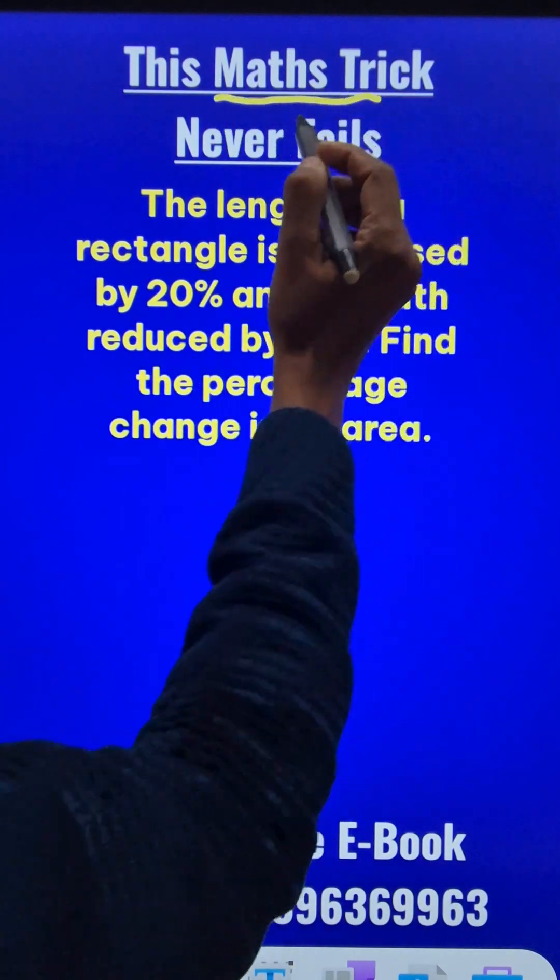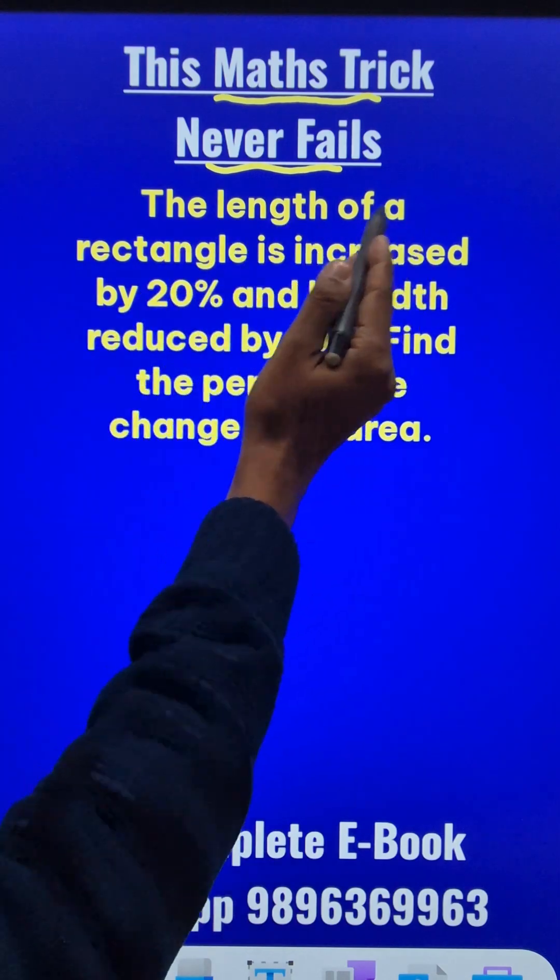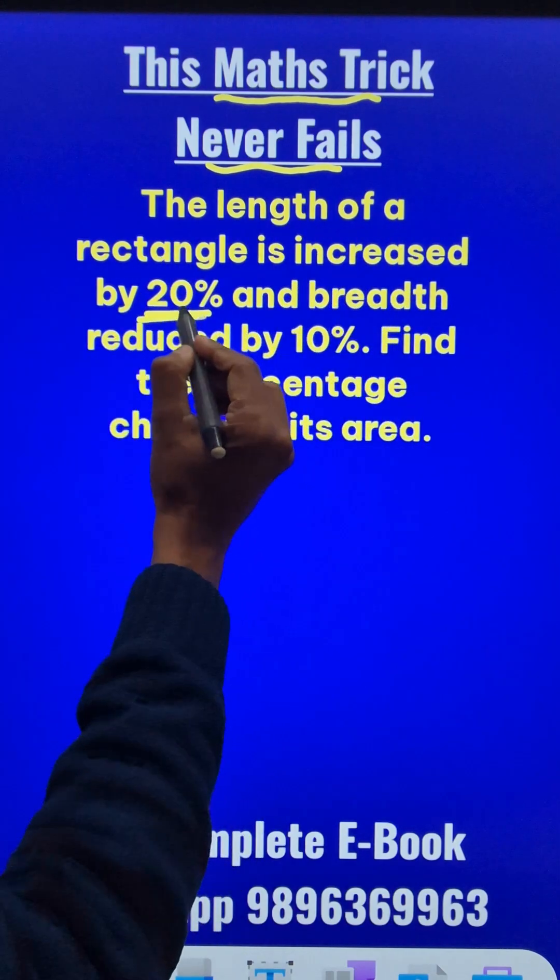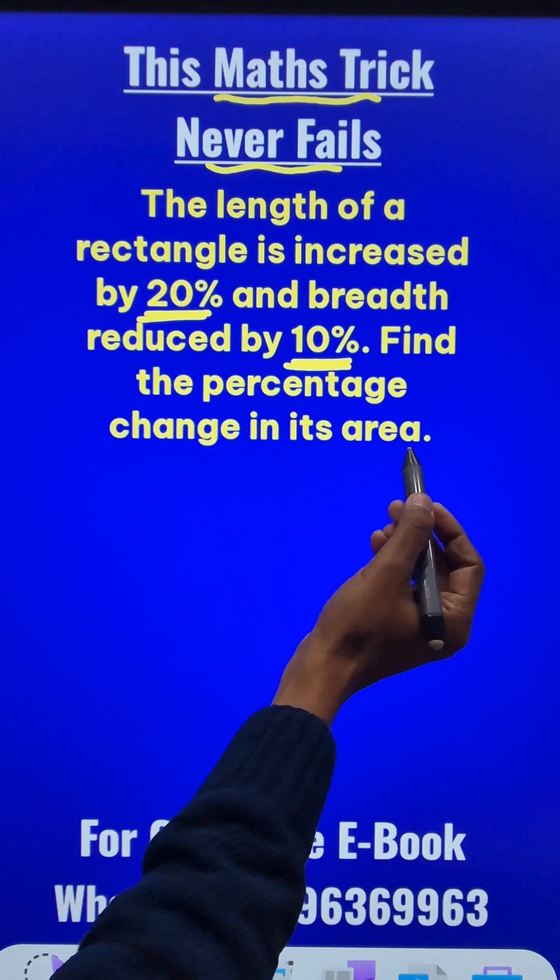This mathematics trick to crack a very important problem of quant never fails. The length of a rectangle is increased by 20% and breadth is reduced by 10%. So we need to find the percentage change in its area.